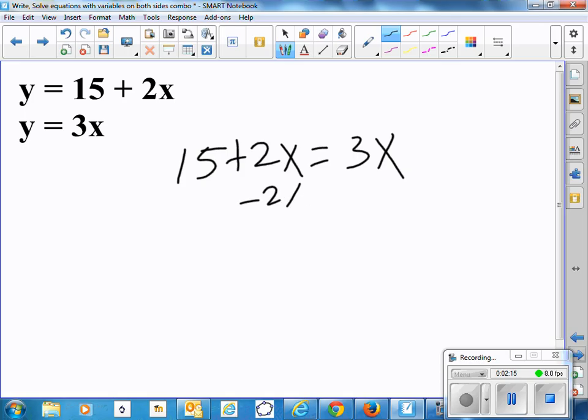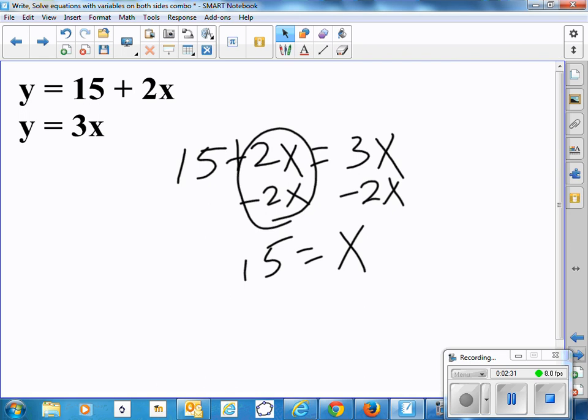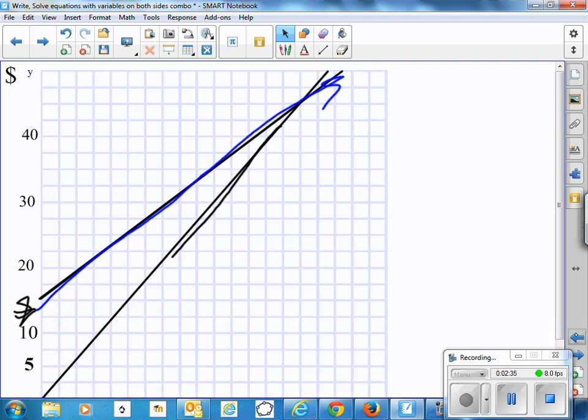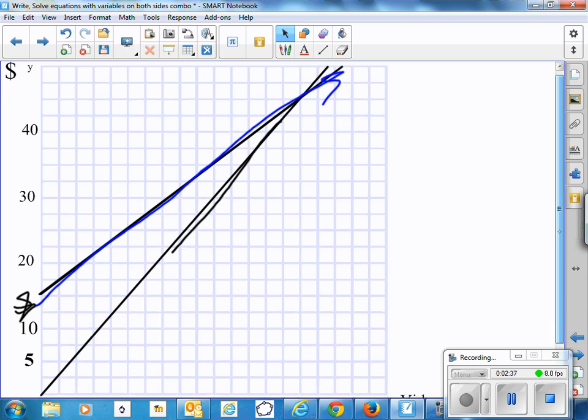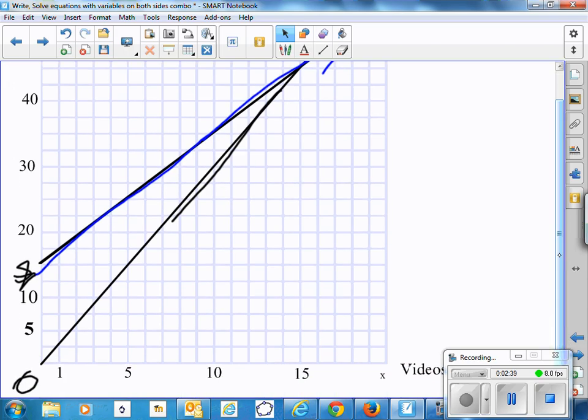And I'll solve. I usually subtract the smaller, the one with the smaller x coefficient. So 15 equals x. So the number of videos rented when those two plans will be the same is 15. So let's go back to our graph. Is that what we see on the graph? Yeah, those two cross at 15.